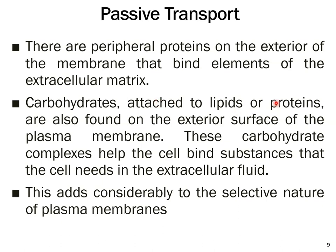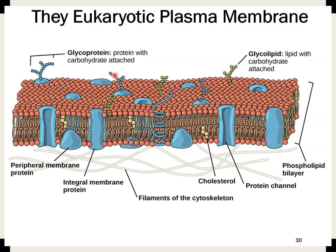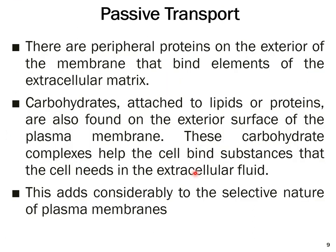Carbohydrates are also attached to lipids or proteins and are found on the exterior surface of the plasma membrane. These carbohydrate complexes help the cell bind substances that the cell needs from the extracellular fluid — their main function is to bind substances which need to be transported inside the cell. All these things add considerably to the selective nature of the plasma membrane, making it selectively permeable.